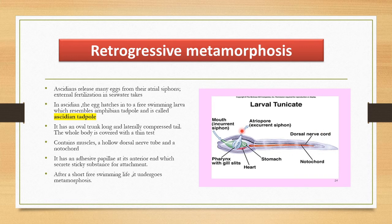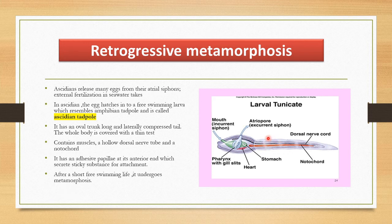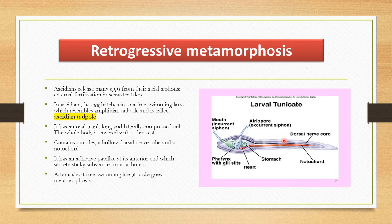What is the morphology? Morphology of larva is: it's an oval shape with a laterally compressed tail. And the whole body is covered by a thin membrane called tunicate or test.